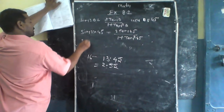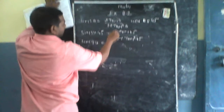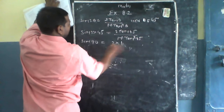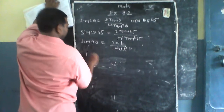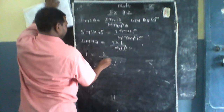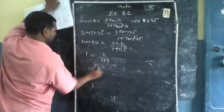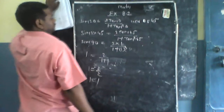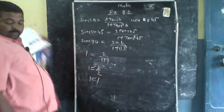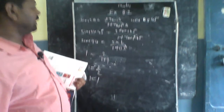sin90 हो गया और sin90 की value 1 होती है। यहाँ solve किया: 2×1 / (1+1²) = 2×1 / (1+1) = 2/2। कट कर देंगे, 1 = 1 आ गया। इस तरह यह proof हो जाता है।